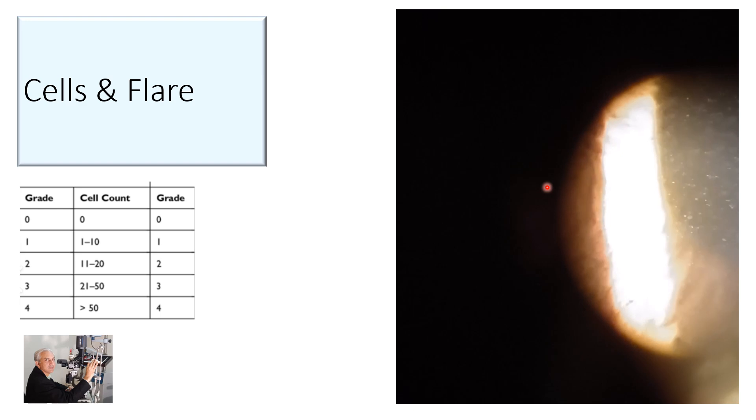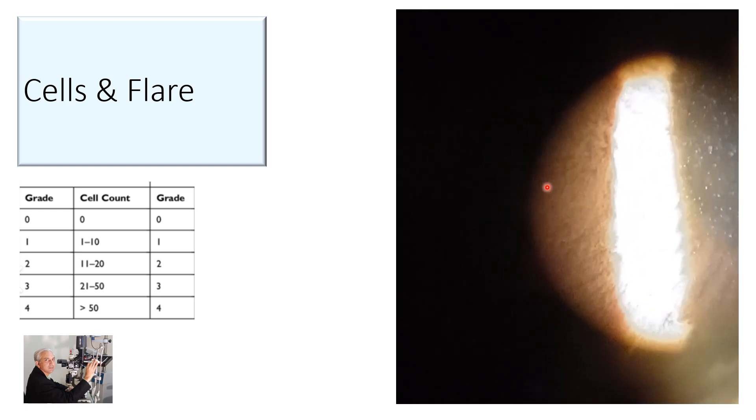Make that beam slightly narrow, go to higher magnification, and increase the intensity. If you're taking an exam, the examiner wants to see that you have increased the magnification and increased the light intensity to see the cells in the anterior chamber in patients with uveitis.